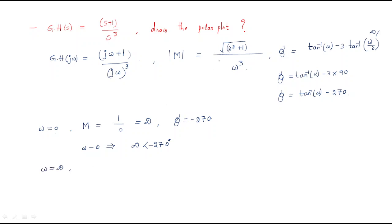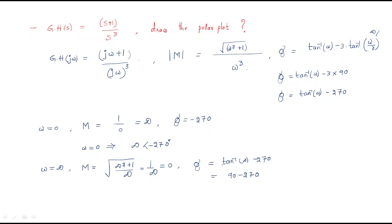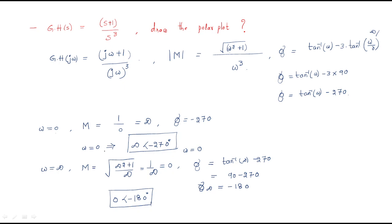For infinite frequency, the magnitude becomes √(∞²+1)/∞³ ≈ 1/∞, which equals zero. For the phase at ω=∞: tan⁻¹(∞) − 270° = 90° − 270° = −180°. So at ω=∞, the magnitude is zero at an angle of −180°.